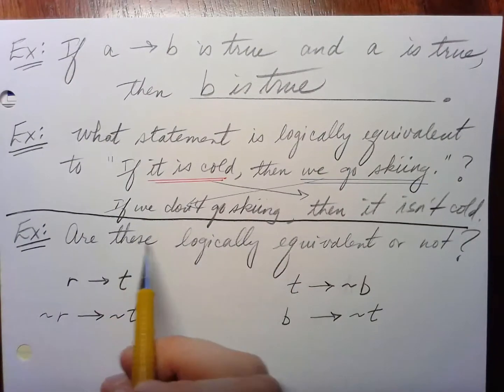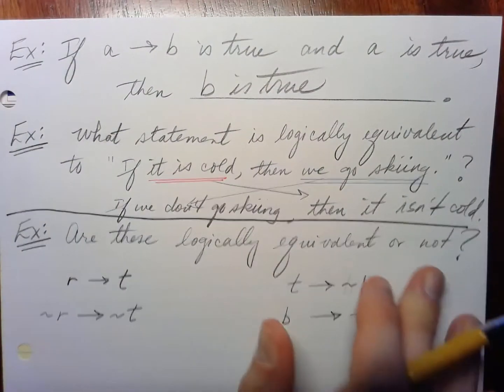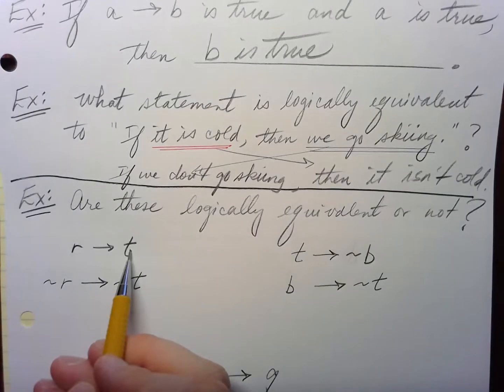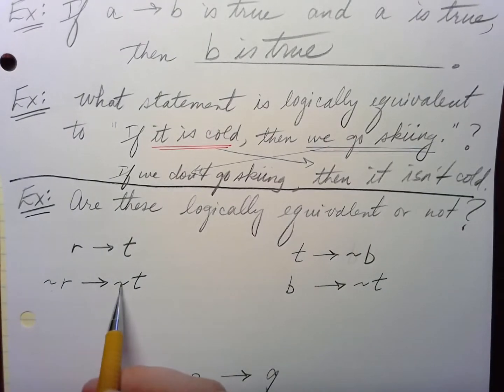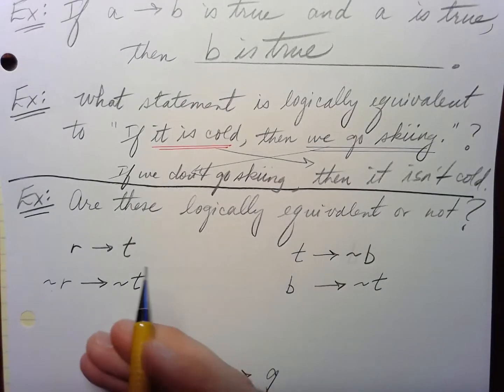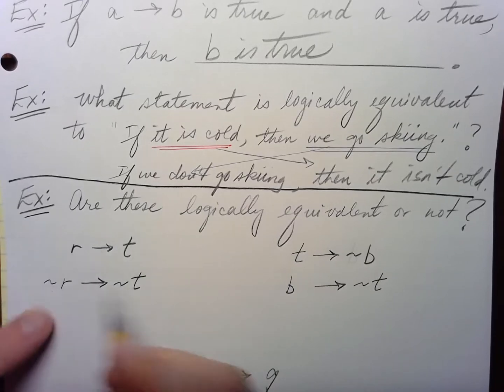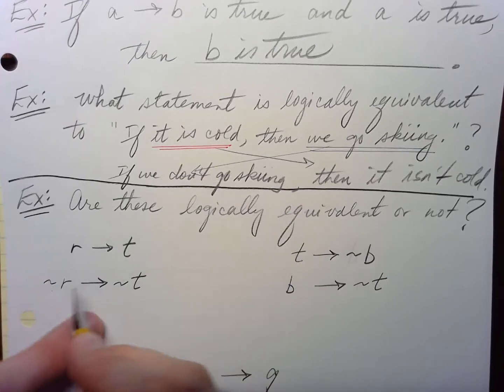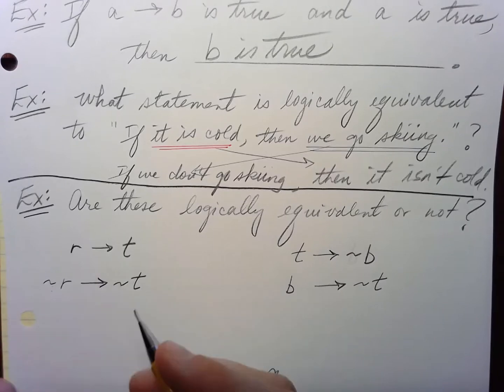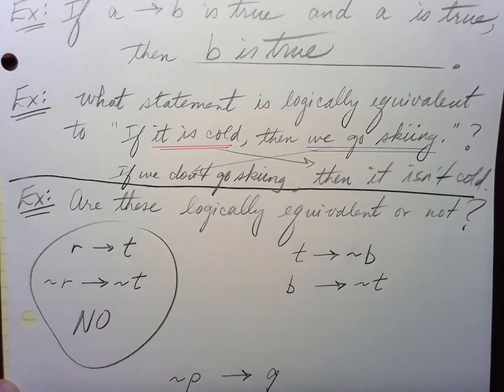See if these are logically equivalent or not. R implies T, not R implies not T. Well, they're not equivalent, because even though we negated both the R and the T, we haven't switched their order. So this is a no.